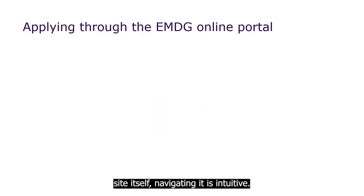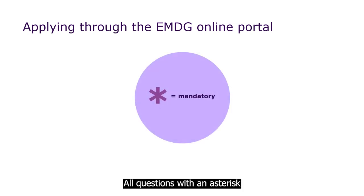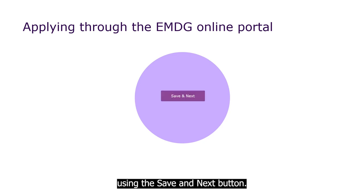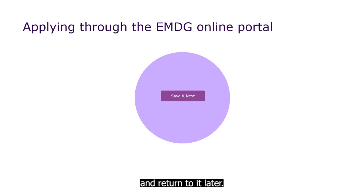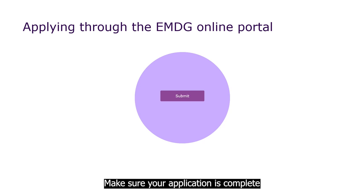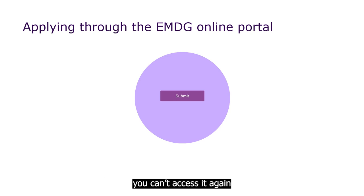As for the site itself, navigating it is intuitive. All questions with an asterisk are mandatory. You navigate to the next page using the Save and Next button, and you can always save your application and return to it later. Make sure your application is complete before you submit — after it's submitted, you can't access it again or provide us with any more information.